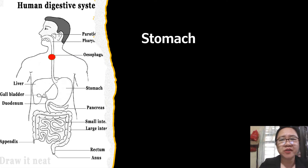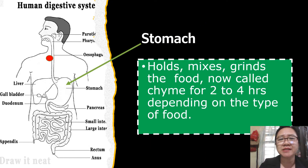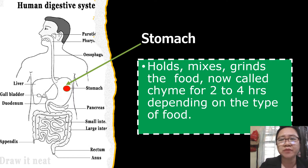From the esophagus, the bolus moves down to the stomach through peristalsis. In the stomach, mechanical digestion occurs when peristalsis contractions churn the bolus. When the bolus mixes with the digestive juices, chemical digestion begins. The hydrochloric acid in the stomach breaks down the bolus into a liquid called chyme. Also, a stomach enzyme called pepsin breaks down most of the protein.